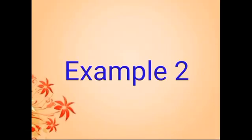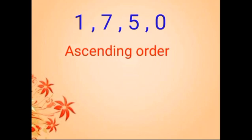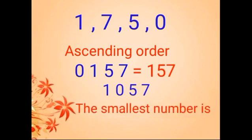Let us see one more example. Look at the digits 1, 7, 5, 0. To form the smallest number, we arrange the digits in ascending order. The ascending order is 0, 1, 5, 7. But this is a three-digit number, so we interchange the positions of the first two digits — 0 and 1 — to get the smallest number: 1,057.